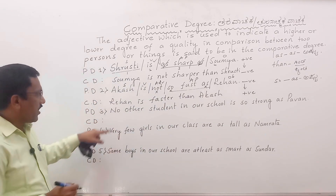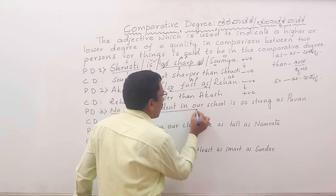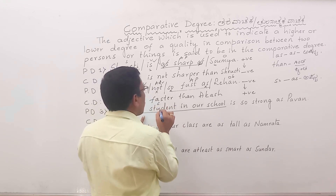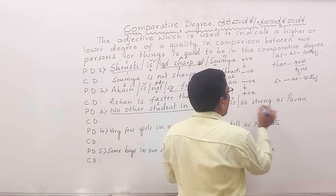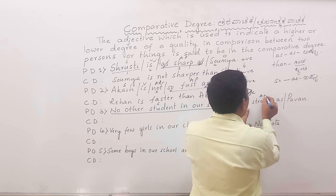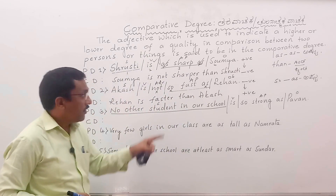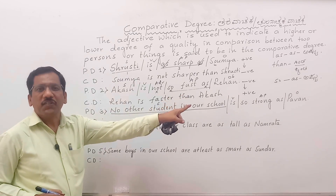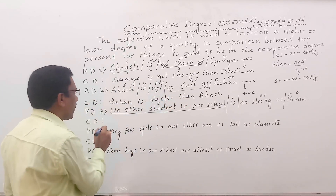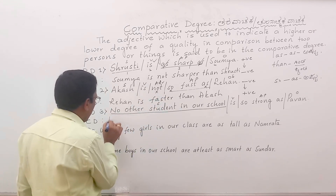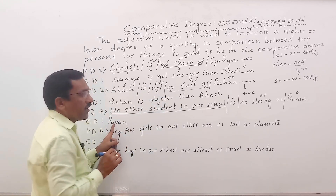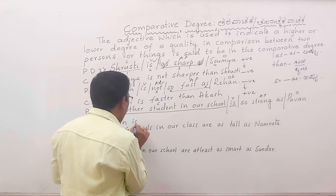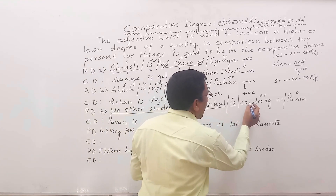Now for positive degree number 3: No other student in our school is as strong as Pavan. Here, 'no other student in our school' is the subject part, 'is' is the verb, 'as strong as' is the adjective part, and Pavan is the object. In comparative degree, the object comes first — so we write Pavan first. After writing the object, we take the verb 'is'.